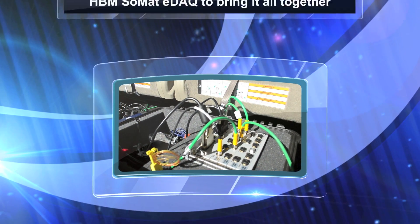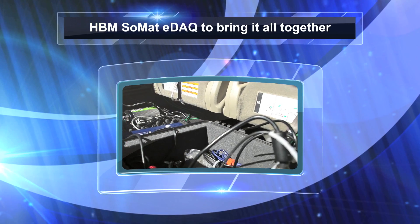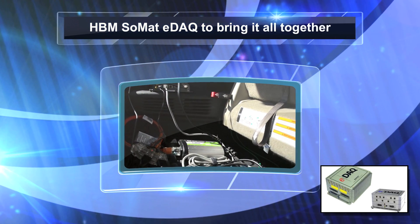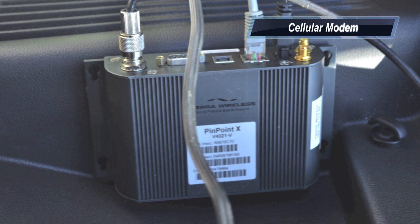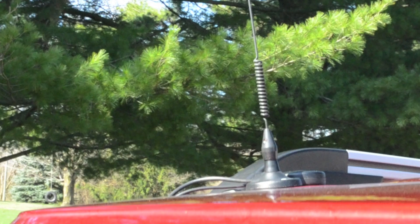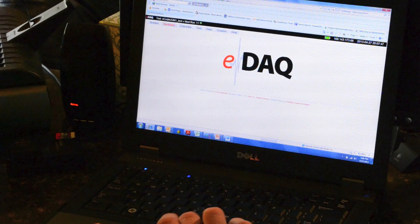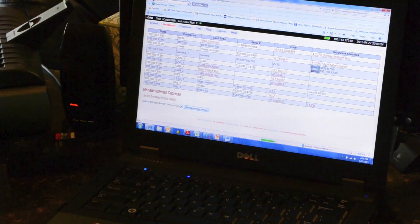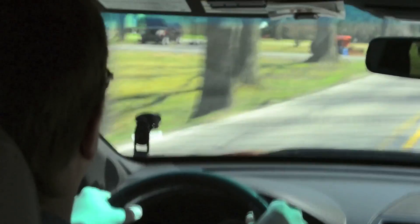HBM has various DAC systems available for in-vehicle testing. I used the rugged and mobile SOMAT eDAC to collect this data. I connected the eDAC to a cellular modem and placed its antenna alongside the GPS hockey puck that was already in place. Once the test was defined, I was ready to record, and the driver was sent on his way.